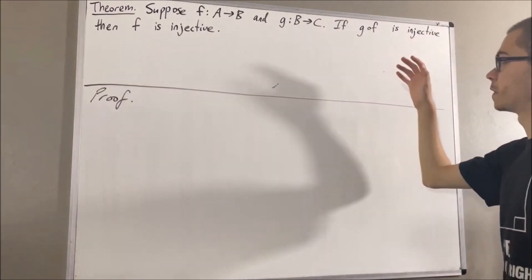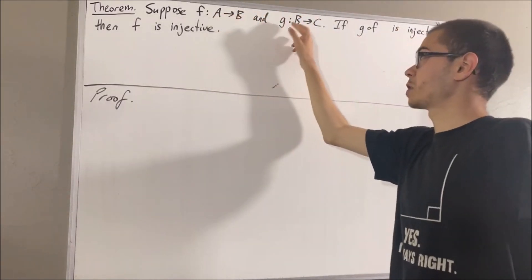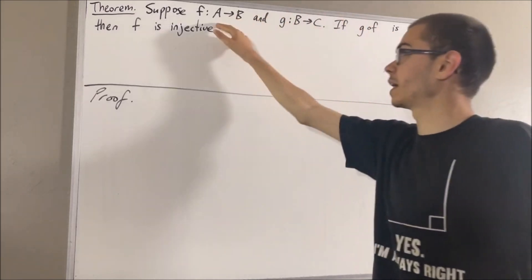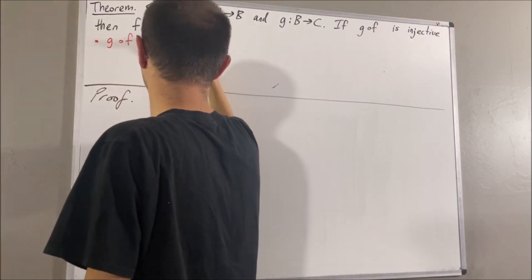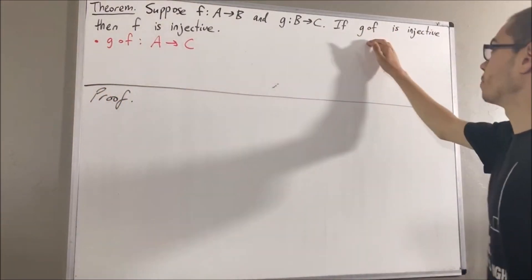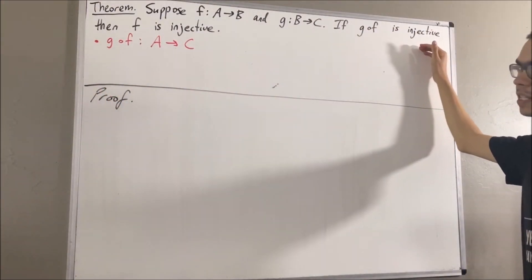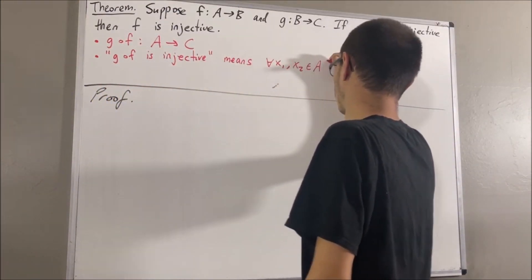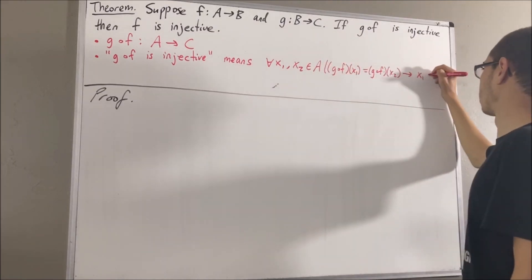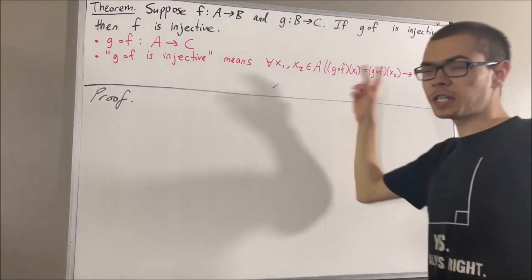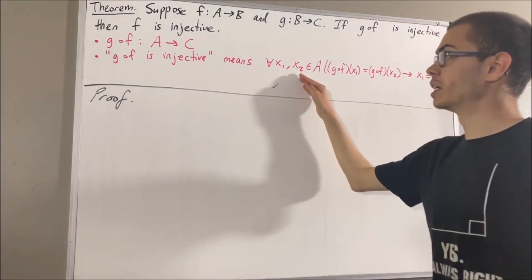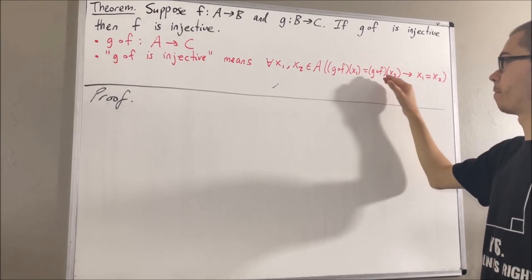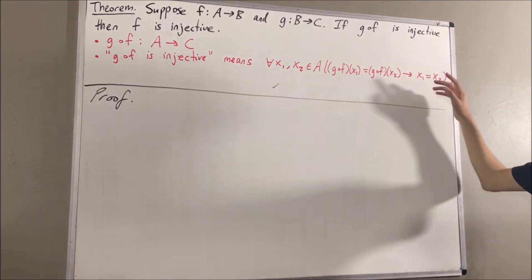Now let's remind ourselves: since f is a function from A to B and g is a function from B to C, we know that g compose f is a function from A to C. And to say that g compose f is injective means the following: for every two elements x1 and x2 in A, if g compose f of x1 equals g compose f of x2, then x1 is equal to x2.